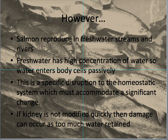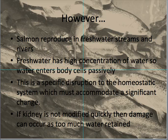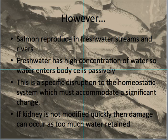The problem is, though, salmon reproduce in fresh water. So when they're adults, they come up the streams and rivers and breed in fresh water. They have now encountered the absolute opposite osmotic spectrum. The fresh water is going to start just entering the body cells passively, threatening to destroy them. So it's a very big disruption to function. If the kidney isn't modified really quickly to start excreting lots of that water — to get rid of it because it no longer wants to keep it — then it's going to be damaged.